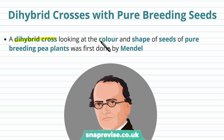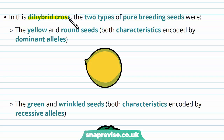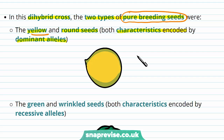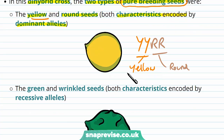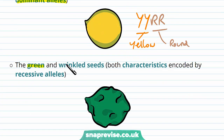A dihybrid cross looking at colour and shape of seeds of pure-breeding pea plants was first done by Mendel, who also did the first monohybrid crosses. In this dihybrid cross, the two types of pure-breeding seeds were the yellow and round seeds, both characteristics encoded by dominant alleles. Pure-breeding seeds mean they only have the alleles for those particular characteristics, so yellow round seeds have genotype YYRR — capital Y, capital Y, capital R, capital R.